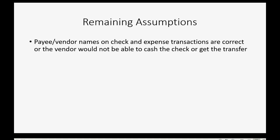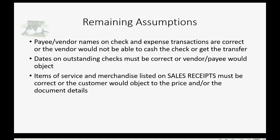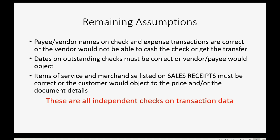What else can we assume is correct because it's checked by an independent source? Payee and vendor names on check and expense transactions must be correct, or the vendor would not be able to cash the check or get the transfer. The dates on outstanding checks must be correct, or the vendor payee would object — for example, if you put the date in the future, the vendor can't get the money. And items of service and merchandise listed on sales receipts must also be correct, or the customer would object to the price or document details. These are all independent checks on transaction data.